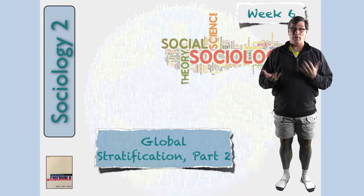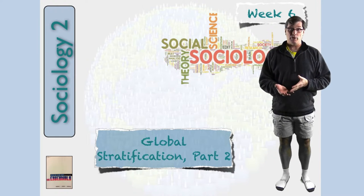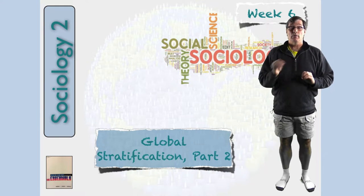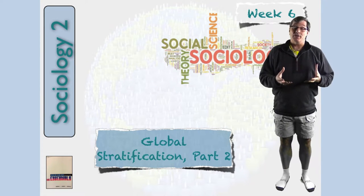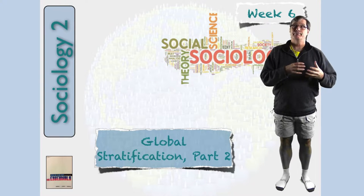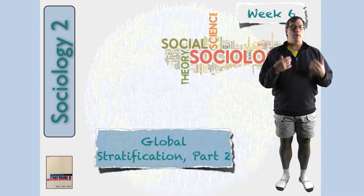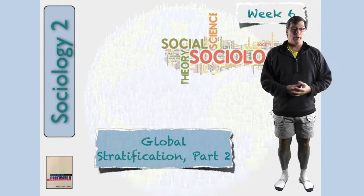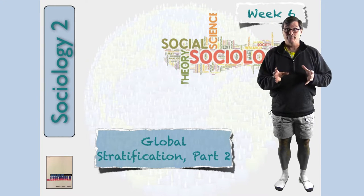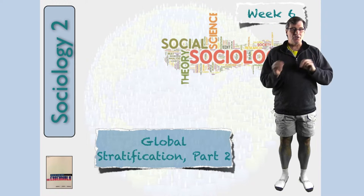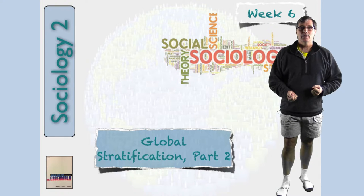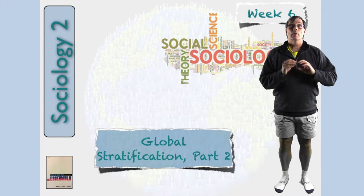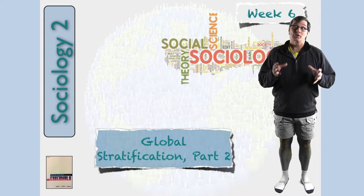When you think about theories of global inequality, some of the questions that might come to mind — especially if you've previewed the chapter — are: what is modernization theory? How do conflict theorists explain the pattern of global stratification? What is world systems theory? These are some of the theories we're going to look at, and they'll help us understand the perpetuation of inequities and what features are maintaining or changing world stratification.